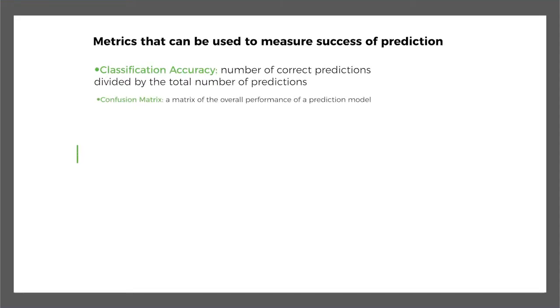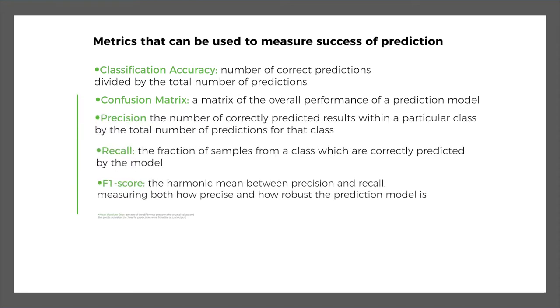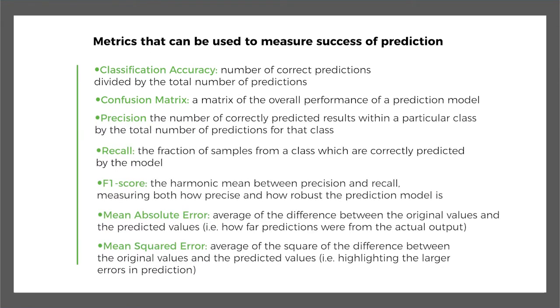You will hear terms like recall, precision, confusion matrix, mean absolute error, mean square error, root mean square error, F1 score, and many others. But what do all these metrics really mean?